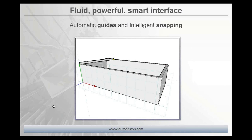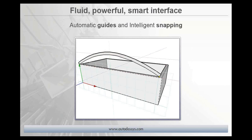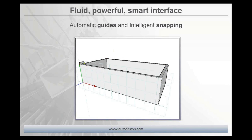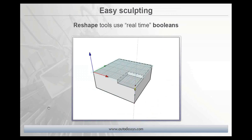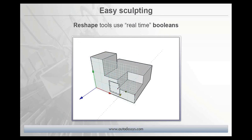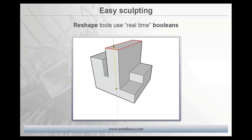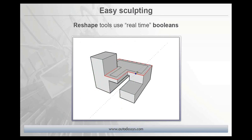The new FormZ 7 has a new fluid, powerful, and smart interface, optimized through automatic guides and intelligent snapping. These automatic drawing features drastically simplify and speed up the modeling process. There are also all sorts of new reshaping tools in FormZ 7, which let you easily sculpt your objects. This is done with real-time Boolean operations, resulting in clean, solid geometry that can be used further down the production pipeline.